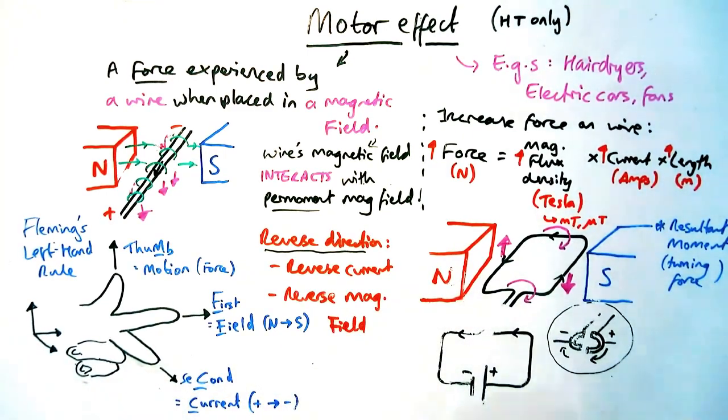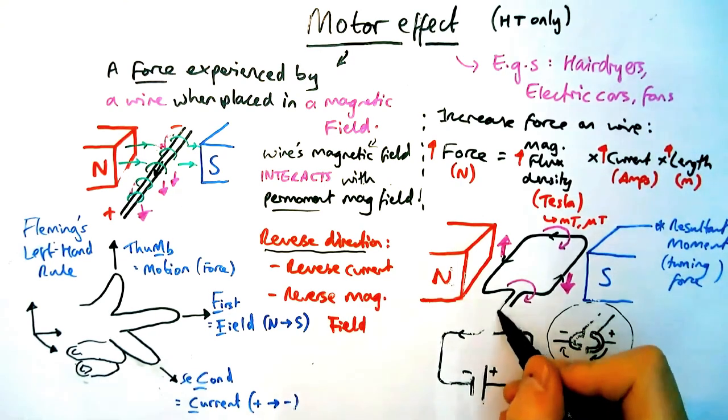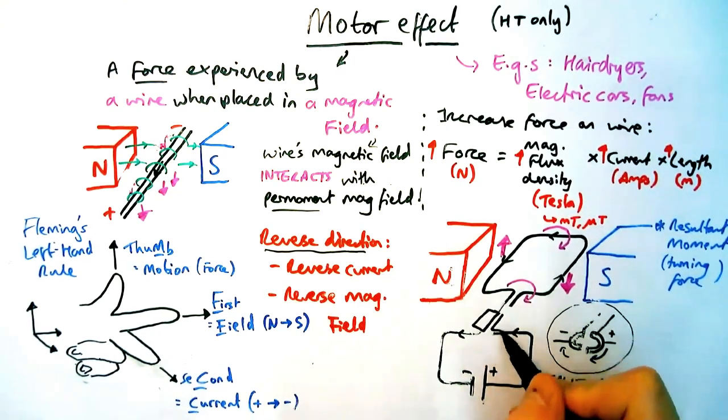Now as well as that, the wire currently will go back and forth, it won't make a full rotation, because we don't have something called a split ring commutator which I know is an absolute mouthful but it's worth remembering because otherwise this whole thing doesn't work.